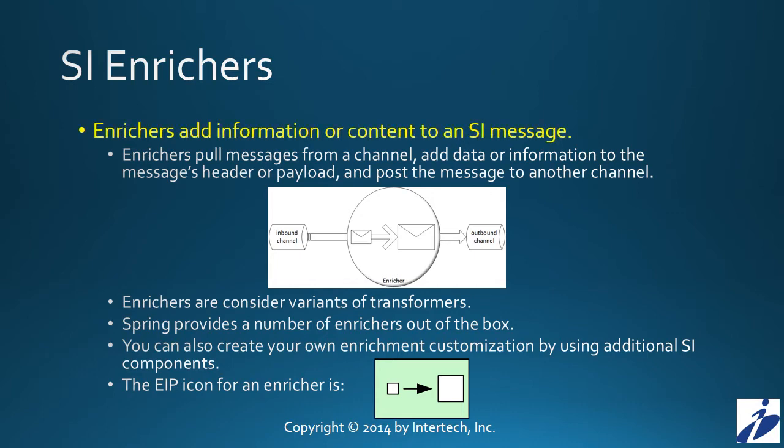Today's tutorial is all about enrichers. Enrichers add information or content to a Spring Integration message. They pull a message from an inbound channel, add data or information to either the payload or the header of the message, and then post that message to another outbound channel. Enrichers are considered a variant of a transformer — those Spring Integration components that transform or otherwise change a message, either its headers or its content. An enricher is a form of a transformer, but one that's always adding content to either the header or the payload.